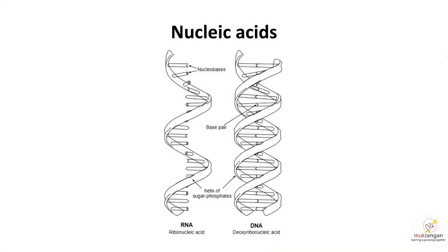As we know, there are two types of nucleic acids: DNA and RNA. DNA is the genetic material in humans, whereas RNA assists in protein synthesis.